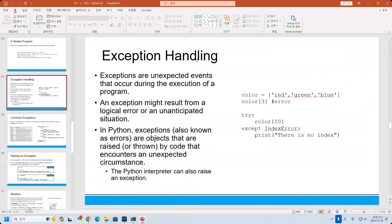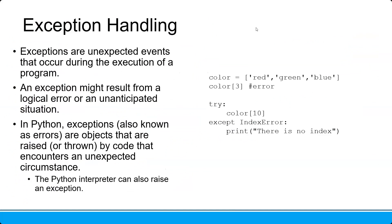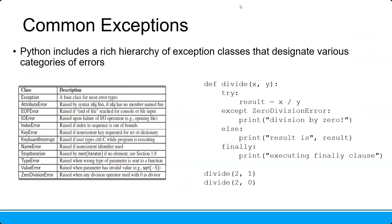We already learned about exception handling. Whenever you have an error, we are not sure what the error is. We can see that there are so many exceptions that have been defined. In this case, we have exception, attribute error, element error, IO error, index error, key error, and so on.